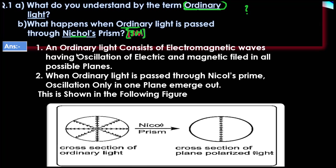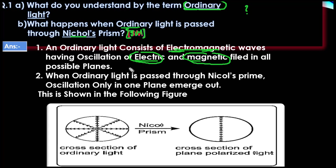Let us understand using a diagram. Ordinary light is electromagnetic waves. If you have a cross section of ordinary light and pass it through a plane, the energy vibrates in all directions.